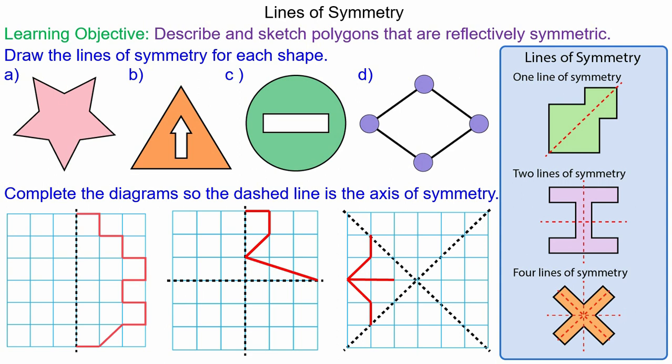The pentagonal star has a line of symmetry at each vertex of the star as you can see from the red lines of symmetry. So in total there are five lines of symmetry in the pentagonal star.